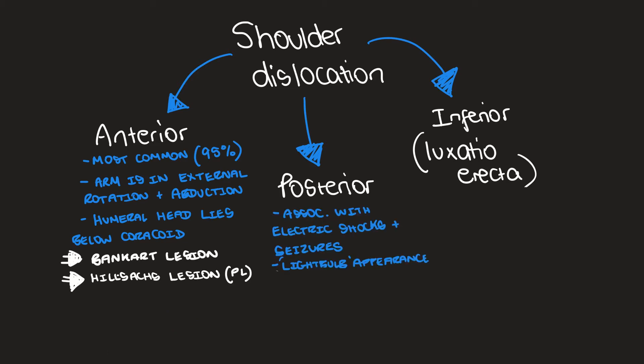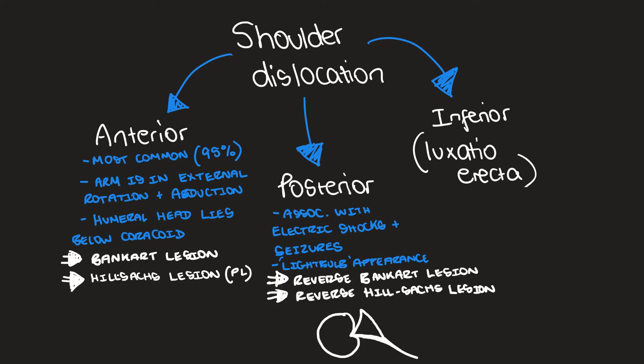Posterior dislocations are far less common. They usually occur in accidents such as electric shocks or with seizures. On an AP film you'll see what is called the light bulb appearance. You can also get overlapping of the glenoid and the humeral head. Specific complications to look out for with a posterior dislocation are reverse Bankart and reverse Hill-Sachs lesions.